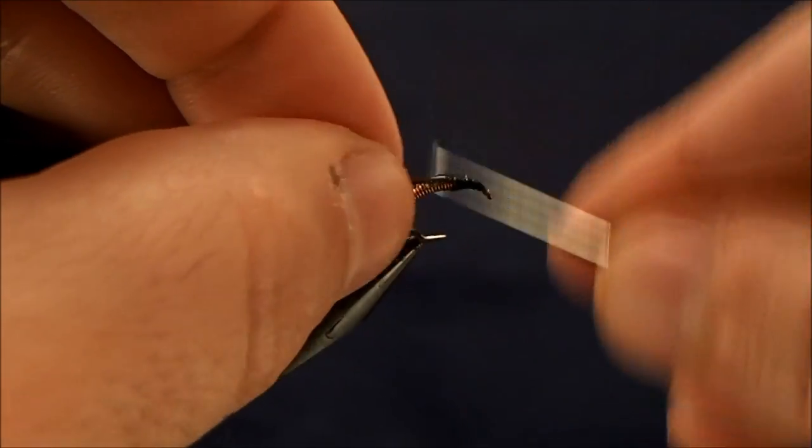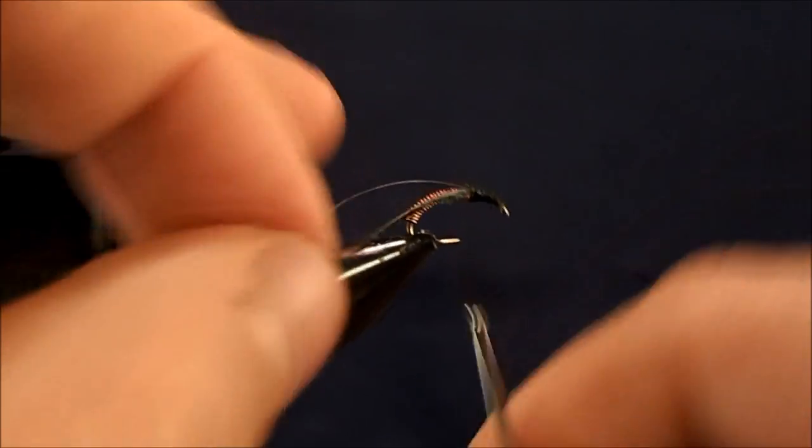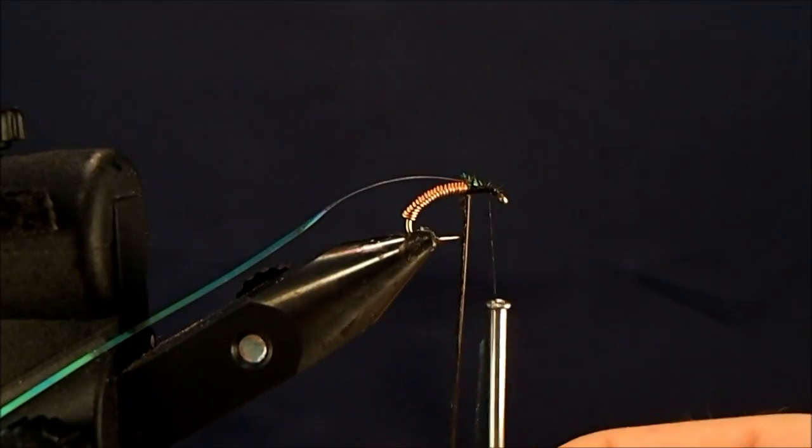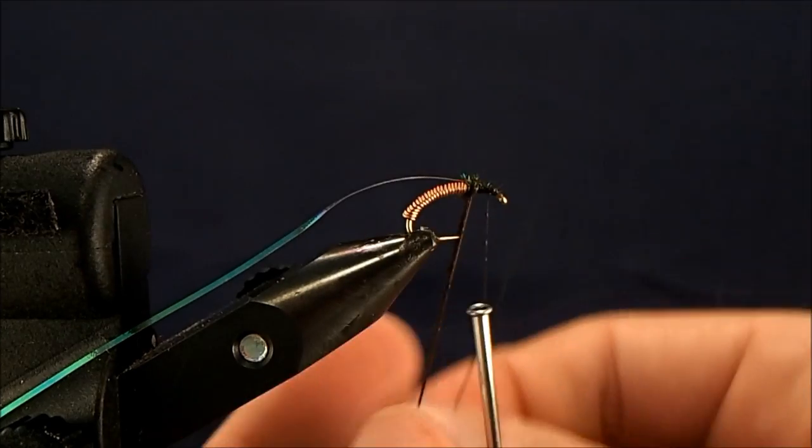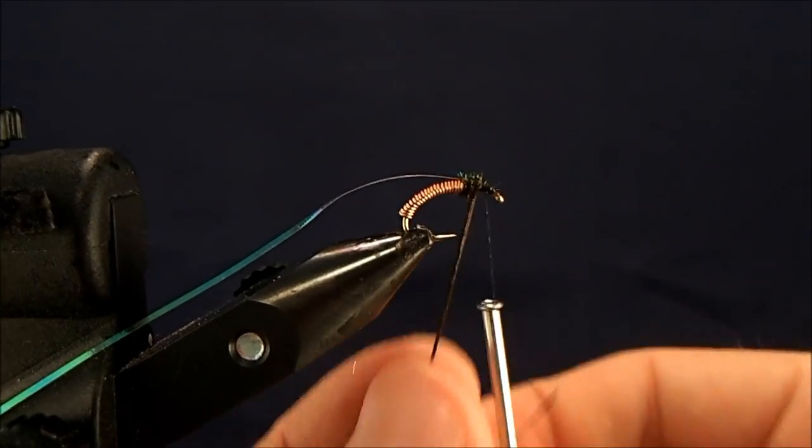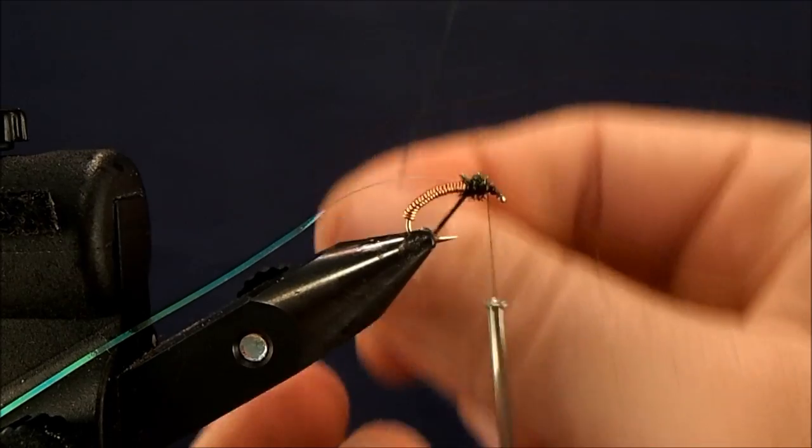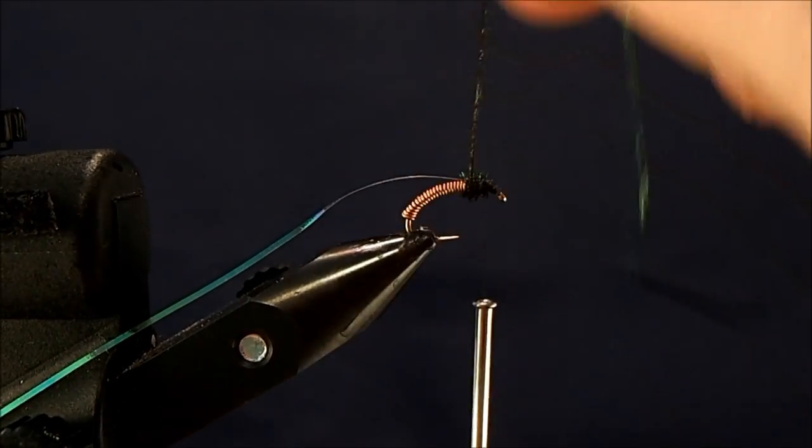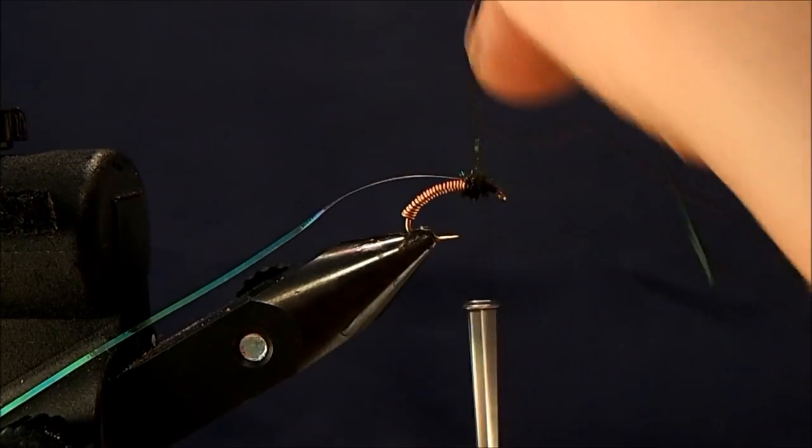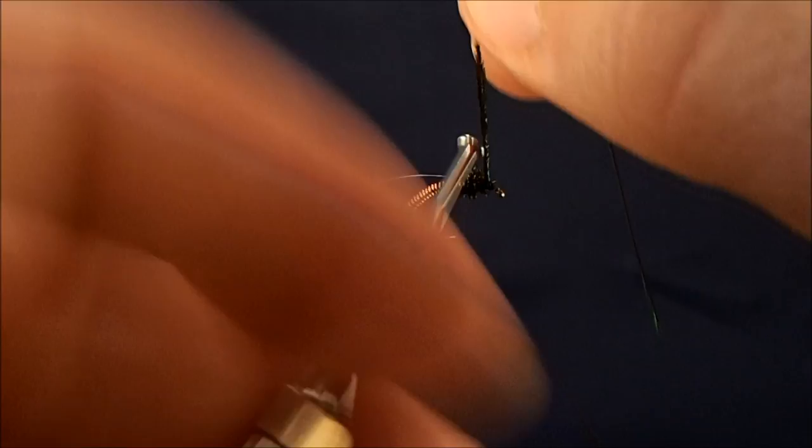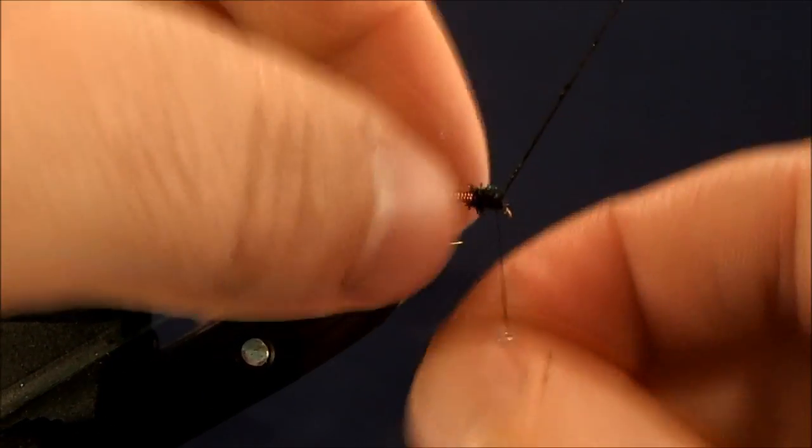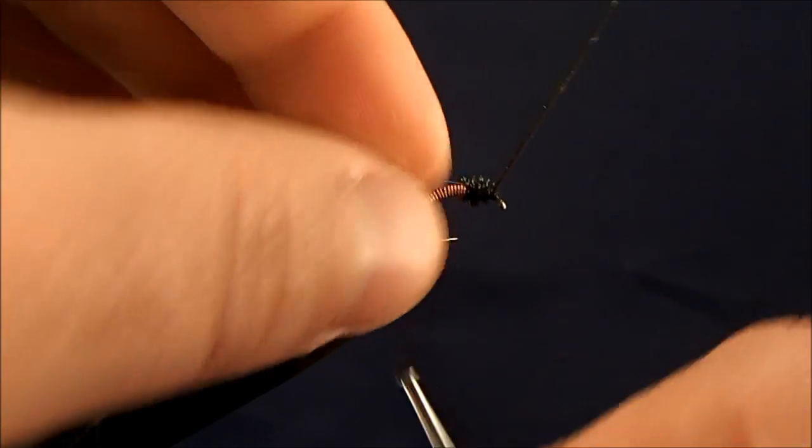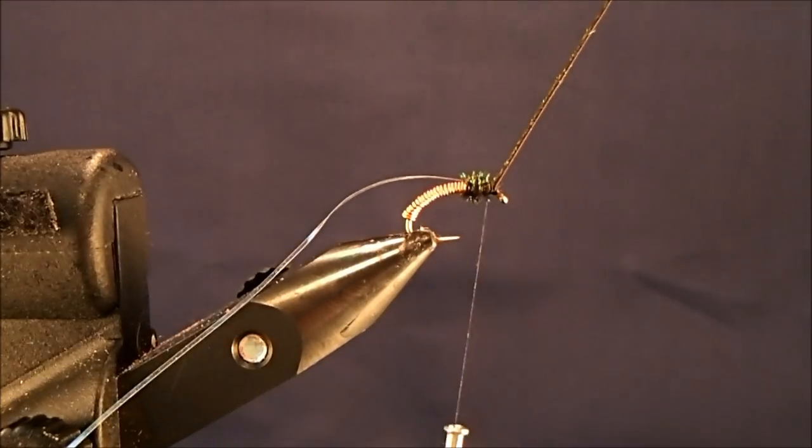So it gives you the shine that you're looking for when you start to wrap it up. So I'll tie that in. And then I can just start advancing my peacock herl up to the front. And I'll take a couple of weaves back on it to make sure that I've got it in there nice and secure. Advance it up to the front of the eye, make a couple of wraps, and I can trim that off.